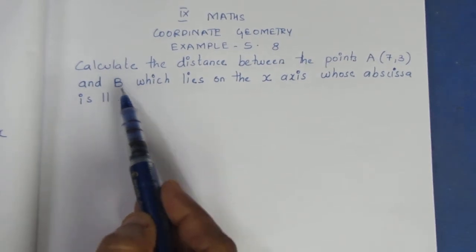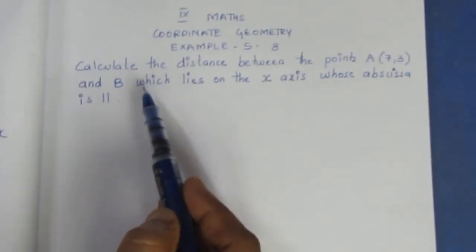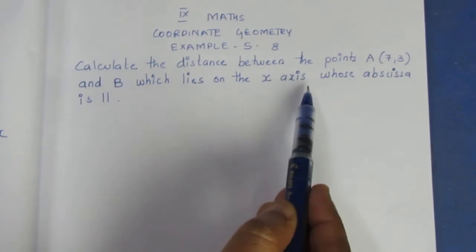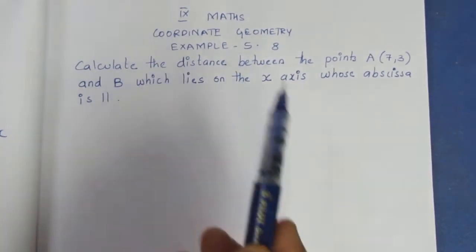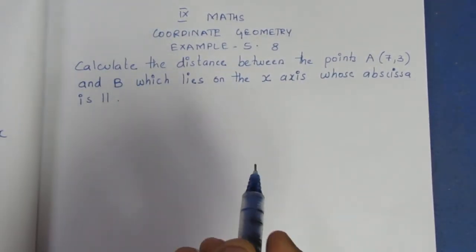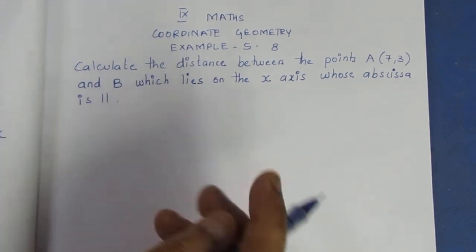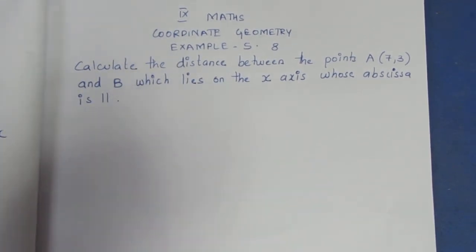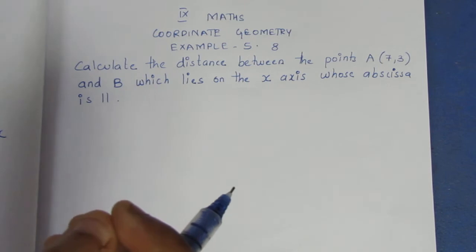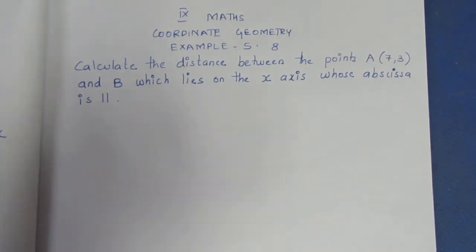B is a point which lies on the x-axis whose abscissa is 11. Abscissa means x-coordinate value, ordinate means y-coordinate value.